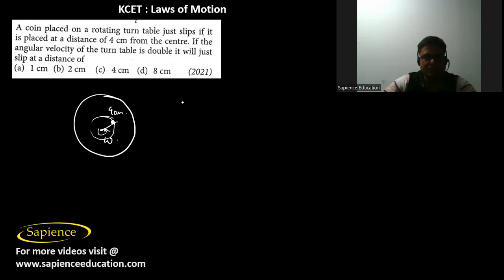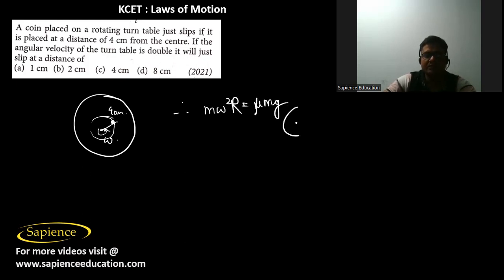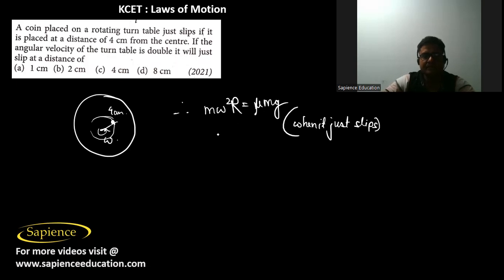We can say that m·ω²·r equals μmg when it just slips, because at the point of slipping, maximum static friction acts. Therefore r equals μg / ω².